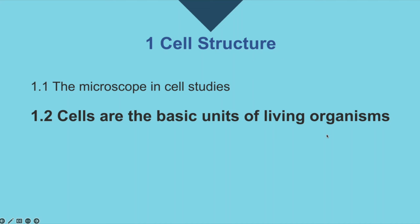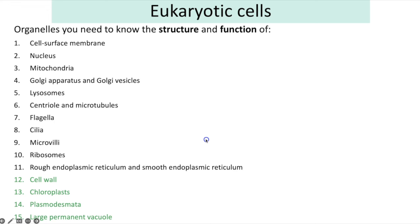The next part of cell structure is knowing that cells are the basic units of living organisms. Here is an extensive list of all the organelles you need to know about in eukaryotic cells — you need to know the structure and function of each. The top ones are found in both animals and plants; those highlighted in green are only found in plant cells.